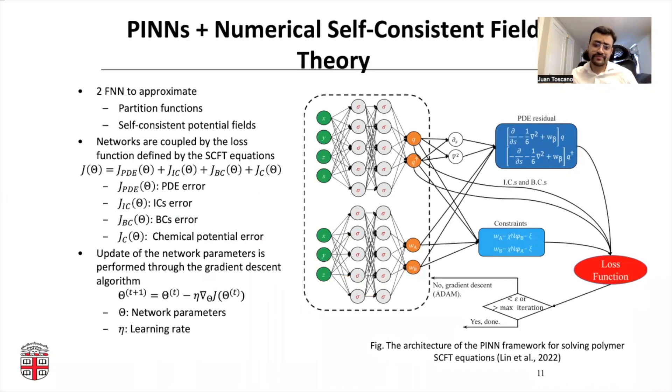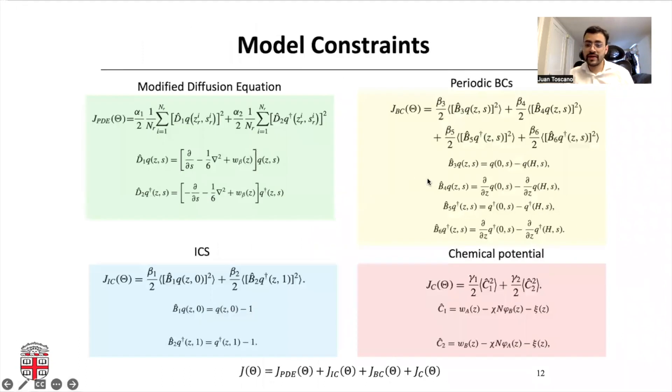For this specific case, for this self-consistent field theory, it's a bit more complicated because the functions are a bit more complicated. We actually cannot do it with a single neural network. We use two neural networks. The top neural network will approximate the partition functions. The bottom neural network will approximate the self-consistent potential fields. We will train the parameters from both neural networks by a set of loss functions. These loss functions are the equations, the constraints that were defined by the self-consistent field theory equations. We will update, as we train the model, the network parameters by gradient descent, similarly to the process that I showed you with plus and minus. But actually this keeps track of how the gradient of the loss changes and we try to follow the global minimum.